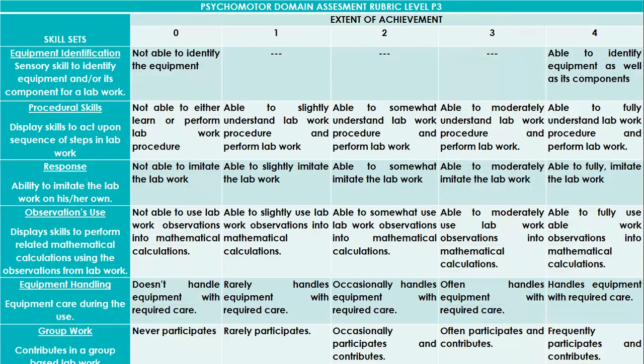We can also label levels as outstanding, best work, developing, or needing improvement. For procedural skill — displaying skills to act upon a sequence of steps — if a student is not able to either learn or perform the lab work procedure, they score zero. If they are able to slightly understand and perform the procedure, they get one mark. If they can somewhat understand and perform, they get two. Performance criteria can vary from lab to lab, project to project, and presentation to presentation.